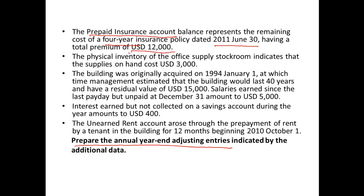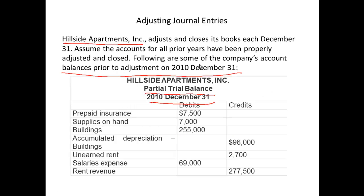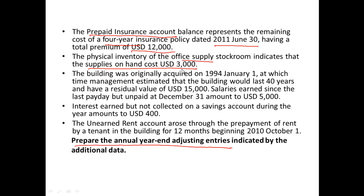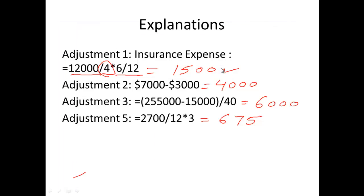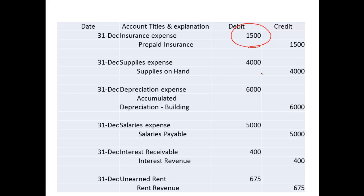Next, the physical inventory of office supplies indicates supplies on hand at a cost of $3,000, while the supplies balance in the trial balance is $7,000. Out of $7,000, only $3,000 is on hand, so we need to book a supplies expense for the difference — $7,000 minus $3,000 equals $4,000. We book a supplies expense of $4,000.